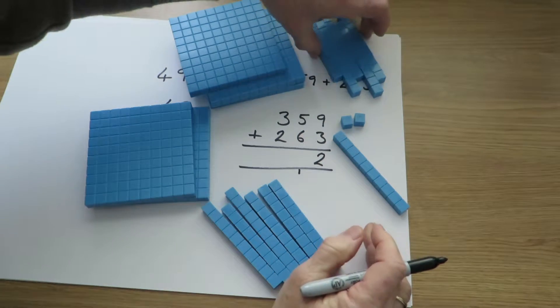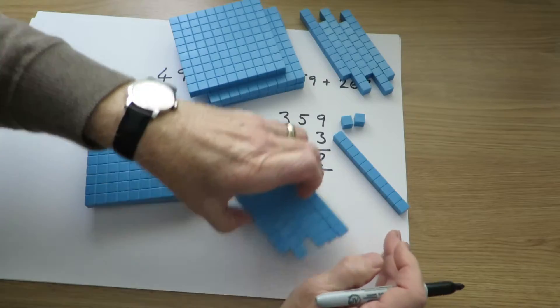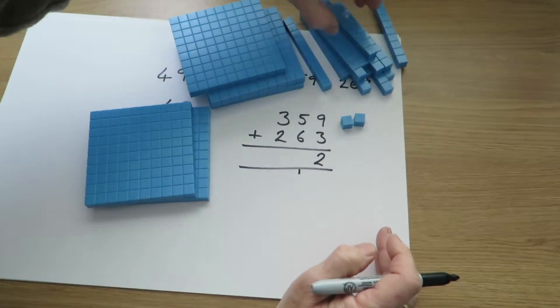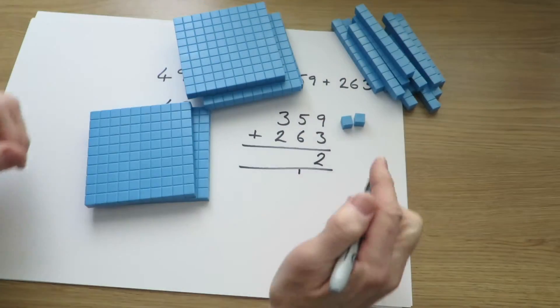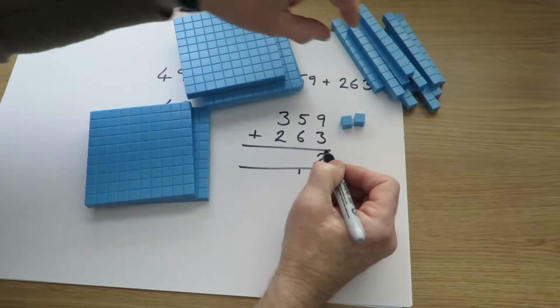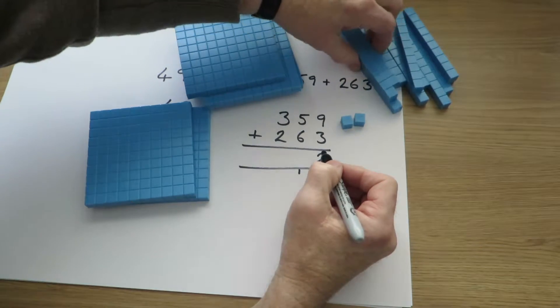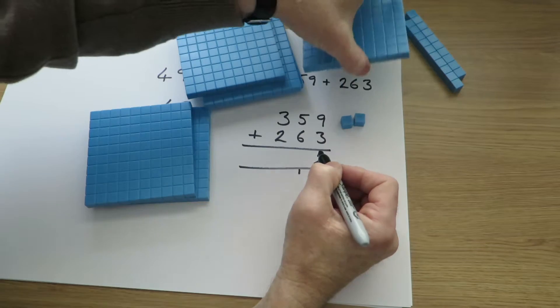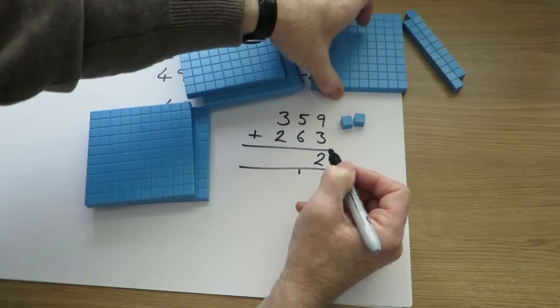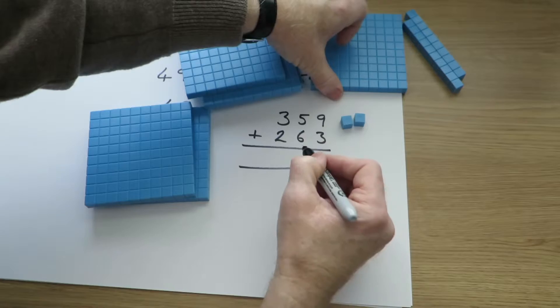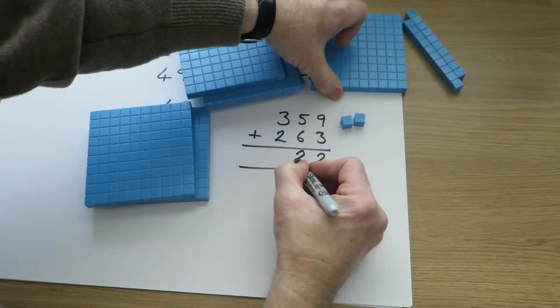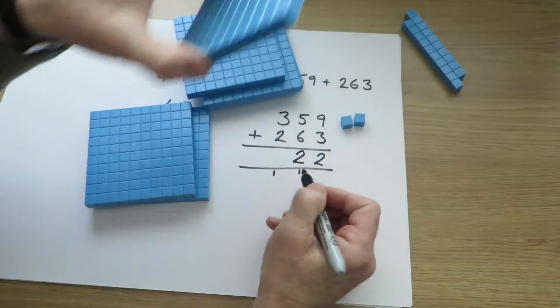So now we've got 5 tens and 6 tens and another 10. So actually we've got 11, we've got 12 tens. Of course 10 of those can be swapped for an extra 100. So we had 5 and 6 and 1, that gave us 12 tens. So that's 2 tens and the extra 100.